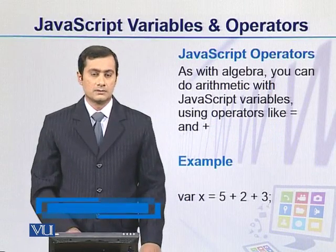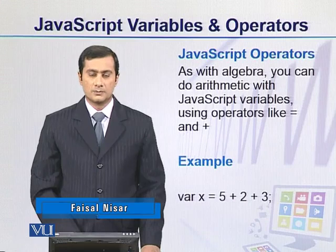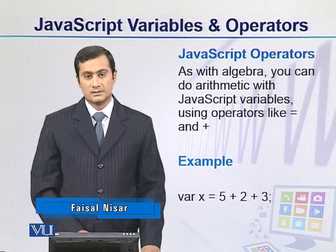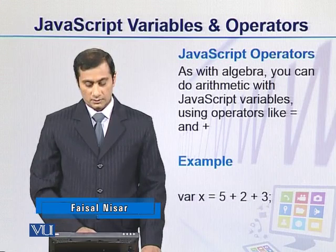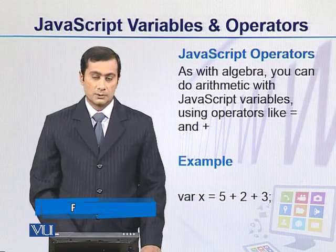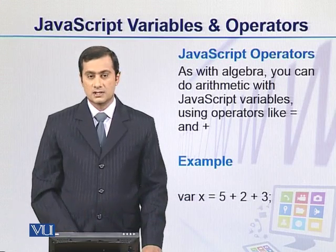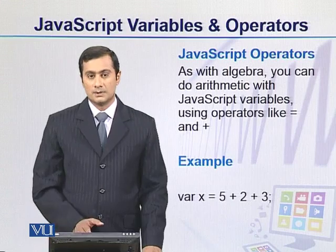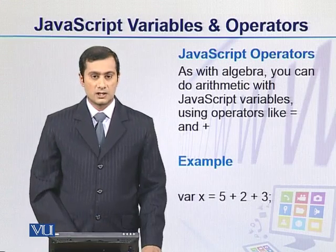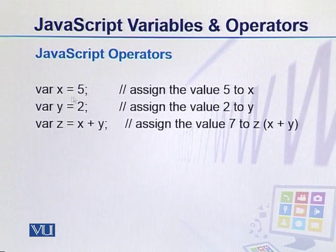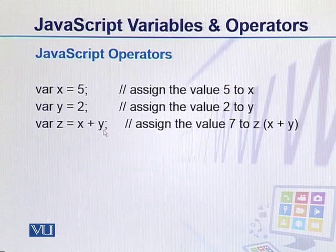JavaScript provides arithmetic and other operators like plus, minus, multiplication, division, and equal sign. The equal sign is for assignment, not to check equality. In this example, we have x assigned a value, y assigned a value, and z assigned an arithmetic expression - the sum of two variables assigned to z.